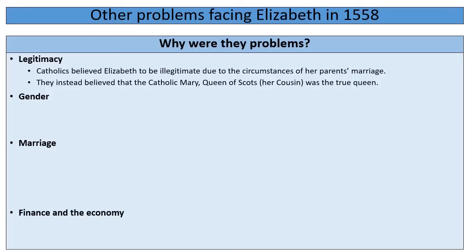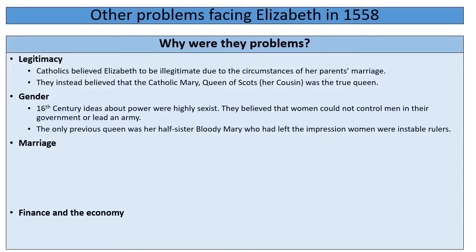The second problem is gender. Gender is a problem for Elizabeth due to the patriarchal and sexist views of the 16th century. Men in the Tudor period held views stating that women could not hold power, could not control men in government, and could not lead an army into battle — all things expected from a monarch at the time. Elizabeth was only the second crowned Queen of England, the only other being Mary I, who had gained the nickname Bloody Mary and was seen as having a very unstable rule. At the beginning of her reign, people saw Elizabeth as weak purely because of her gender.